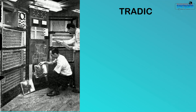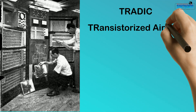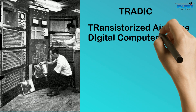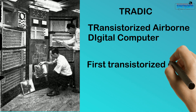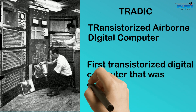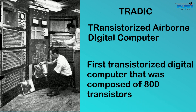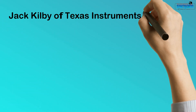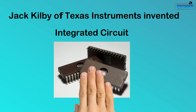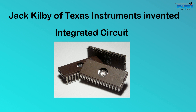This is TRADIC or Transistorized Airborne Digital Computer, invented in 1954. It is the first transistorized digital computer that was composed of 800 transistors. Another revolution in computer technology was by Jack Kilby of Texas Instruments, who invented integrated circuits in 1958, which packed many transistors onto a single chip. This was economically feasible and also reduced its power and heat consumption.